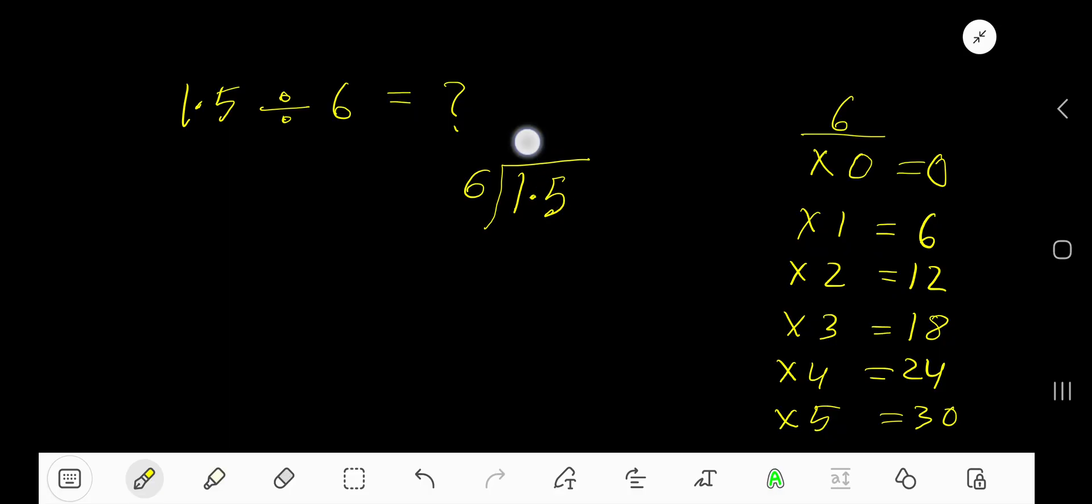Bring down the next digit. But before this, the decimal must come to the quotient directly. 6 goes into 15 how many times? 3 times is 18, which is greater, so 2 times.